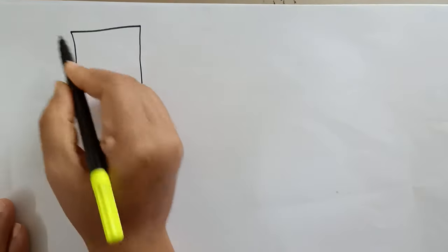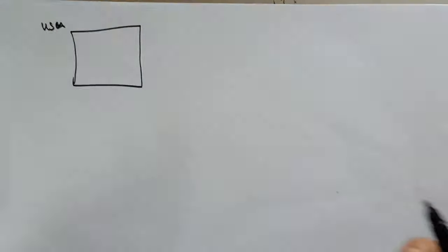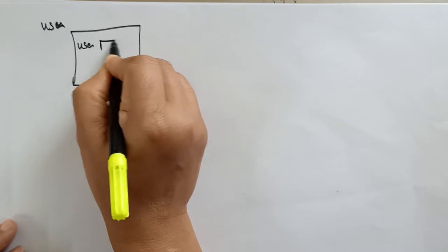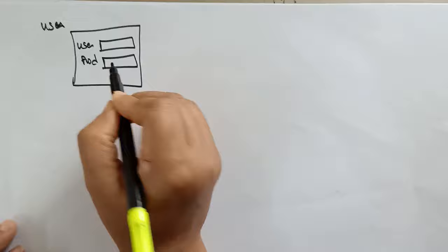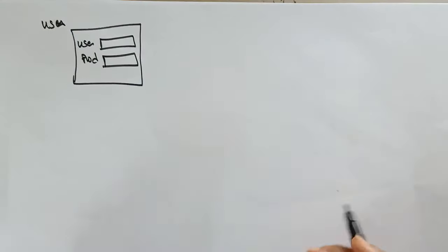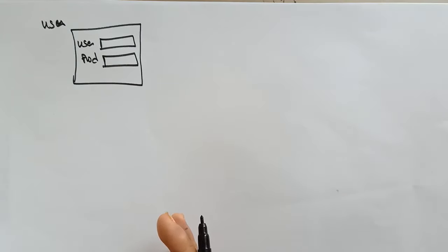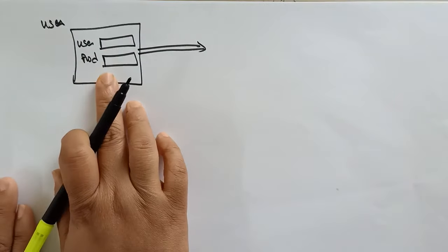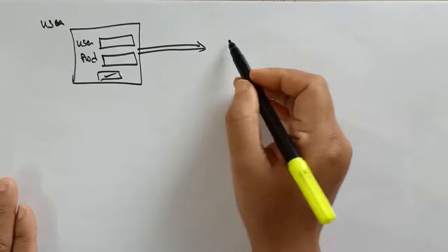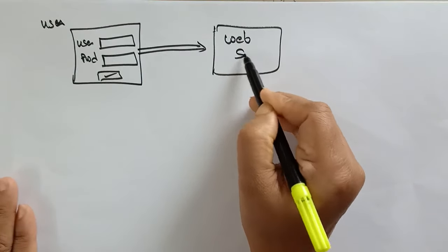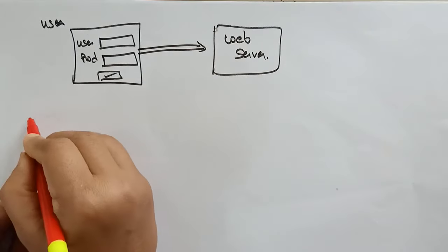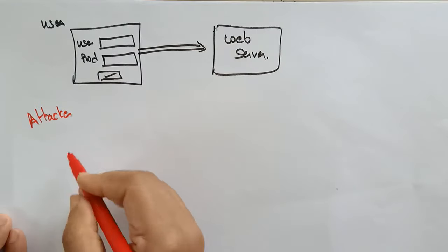Let me explain with a simple example. There is a user form where the user enters a username and password to access the database. The password has conditions like capital letters and small letters. The hacker identifies these requirements. When the user clicks submit with their username and password, they access the web server. The attacker then performs SQL injection.